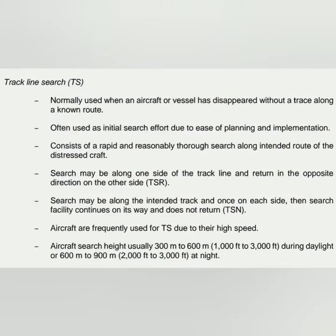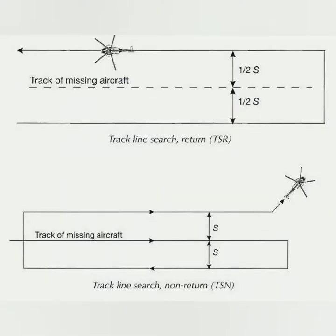The next search pattern is track line search, used when an aircraft or vessel has disappeared without a trace along a known route. This is often the initial effort because it is easy to implement. Aircraft are frequently used due to their high speed. Aircraft search height is usually 300–600 meters during daytime and 600–900 meters at night. There are two types: track line search return, which uses half the sweep width from the track and searches the same area twice, and track line search non-return, where the aircraft sweeps one area then moves to the adjacent area without repeating.